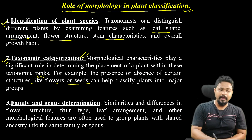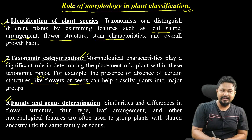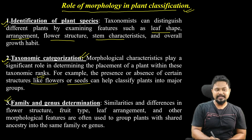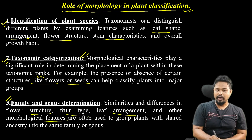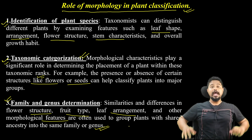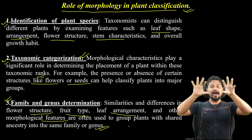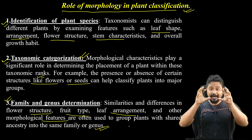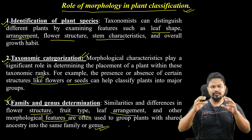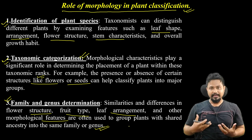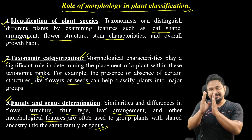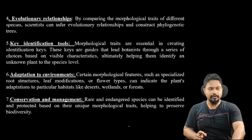Next is family and genus determination. Similarities and differences in flower structure, fruit type, leaf arrangement, and other morphological features are often used to group plants with shared ancestry into the same family or genus, helping to determine which family or genus a plant belongs to.